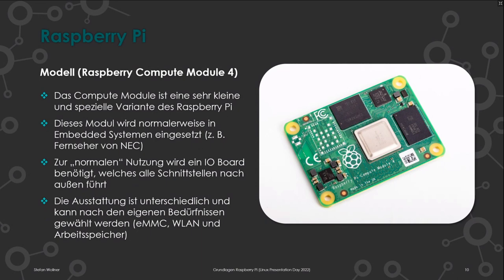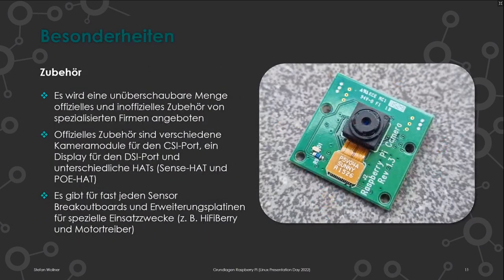Ich persönlich empfehle den Vierer. Es gibt unzählige Firmen und auch die Raspberry Pi Foundation selbst, die Zubehör anbieten: von Kameramodulen bis hin zu offiziellen Hats, die man auf die 40-polige Leiste steckt. Darauf sind zum Beispiel schon LEDs verbaut sowie Sensoren für Temperatur, Feuchtigkeit und Beschleunigung.